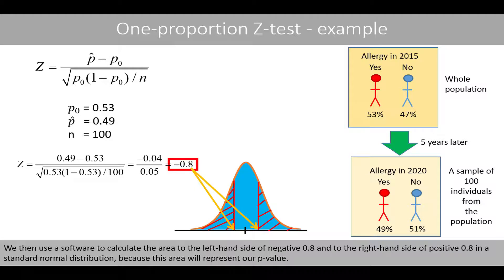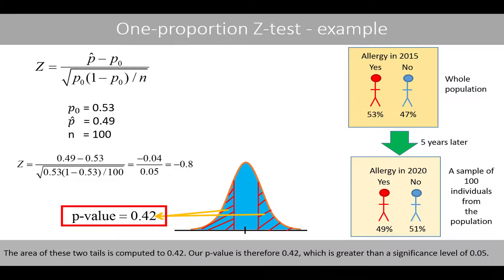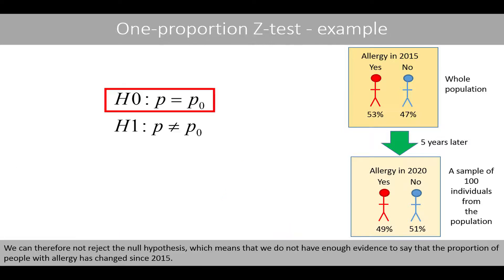We then use software to calculate the area to the left-hand side of negative 0.8 and to the right-hand side of positive 0.8 in the standard normal distribution, because this area represents our p-value. The area of these two tails is computed to 0.42. Our p-value is therefore 0.42, which is greater than the significance level of 0.05. We can therefore not reject the null hypothesis, meaning we do not have enough evidence to say that the proportion of people with allergy has changed since 2015.